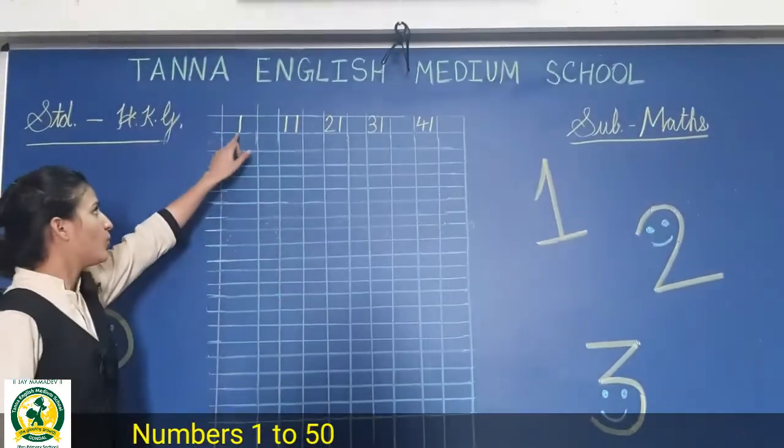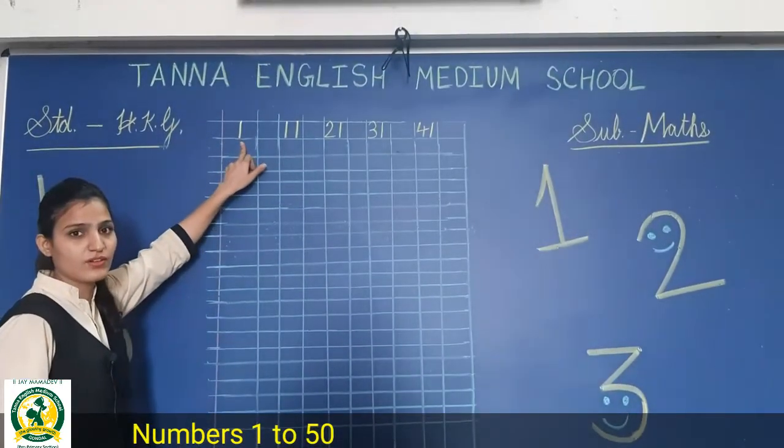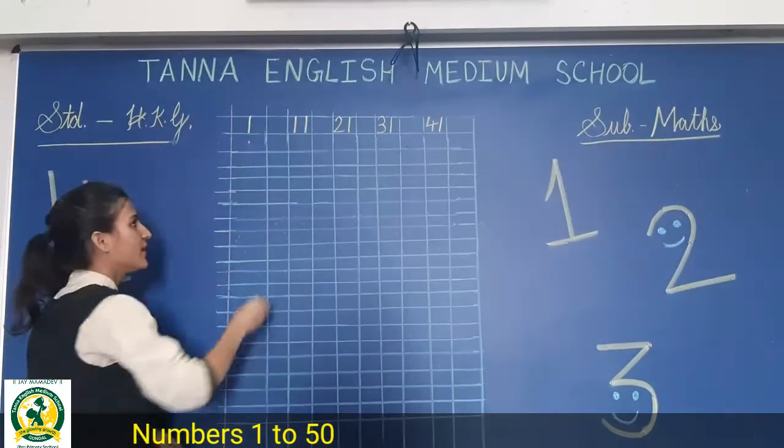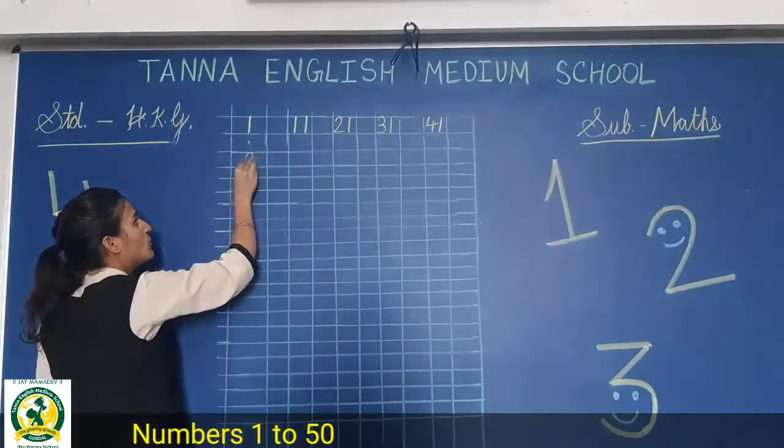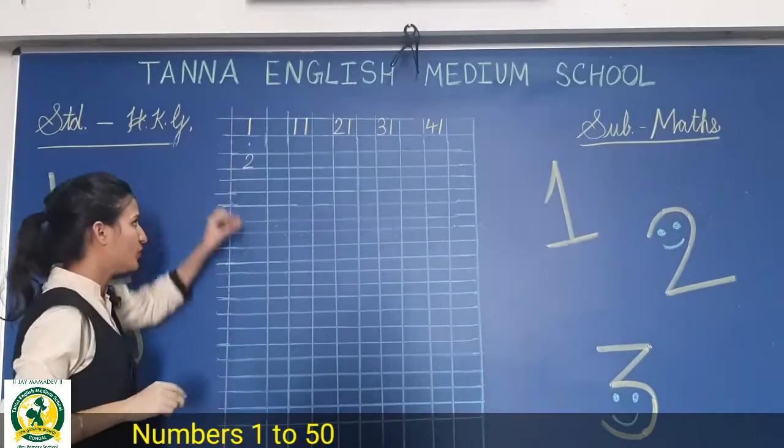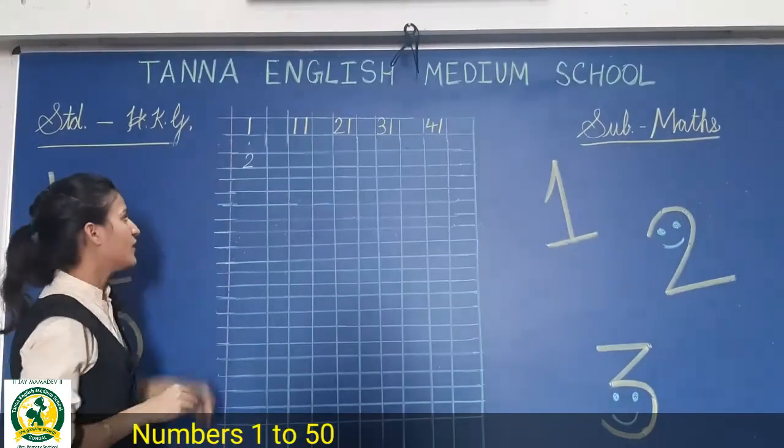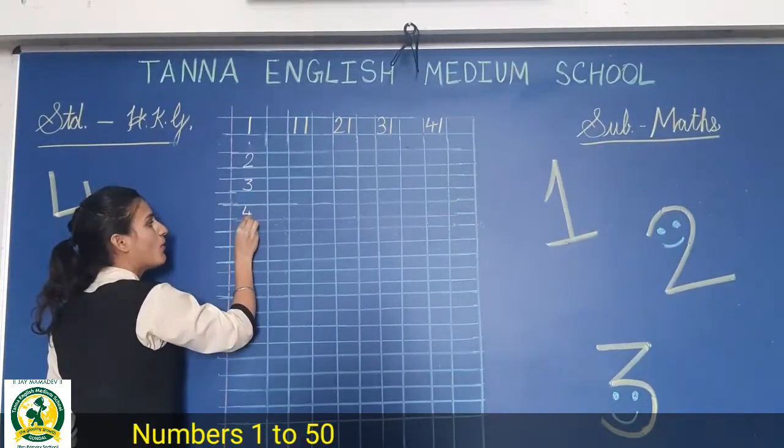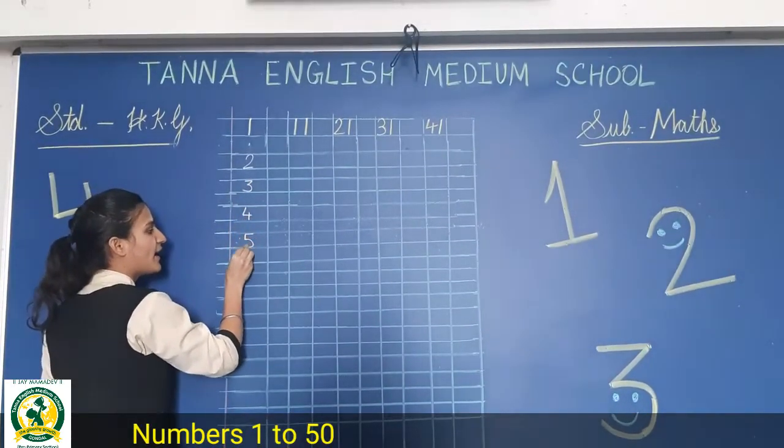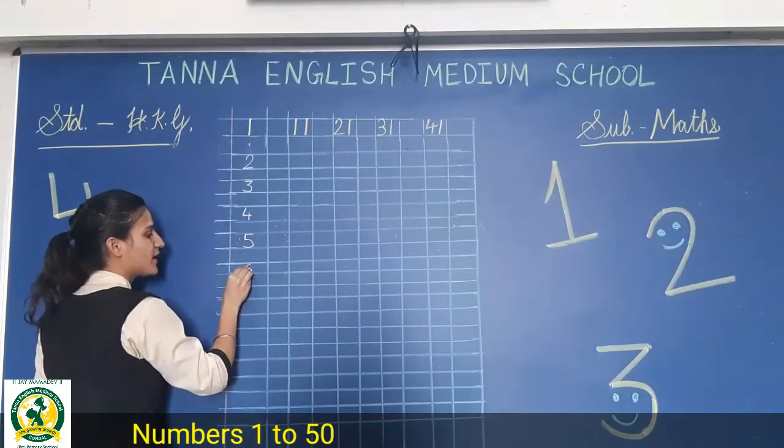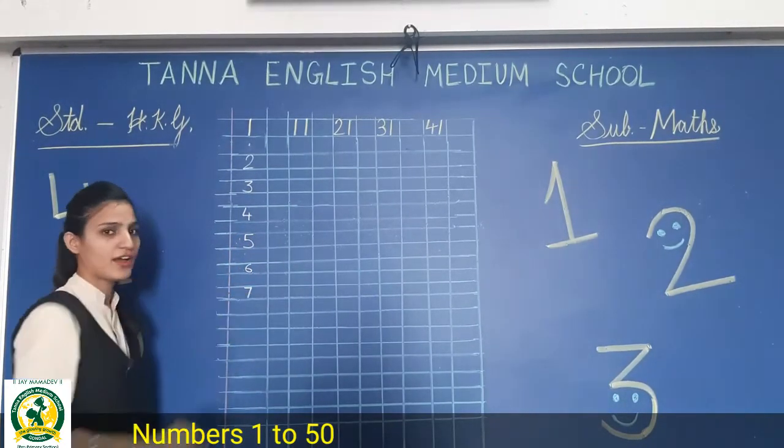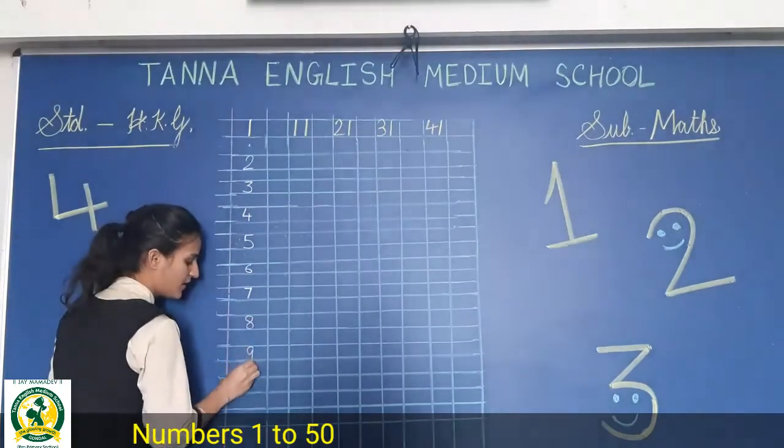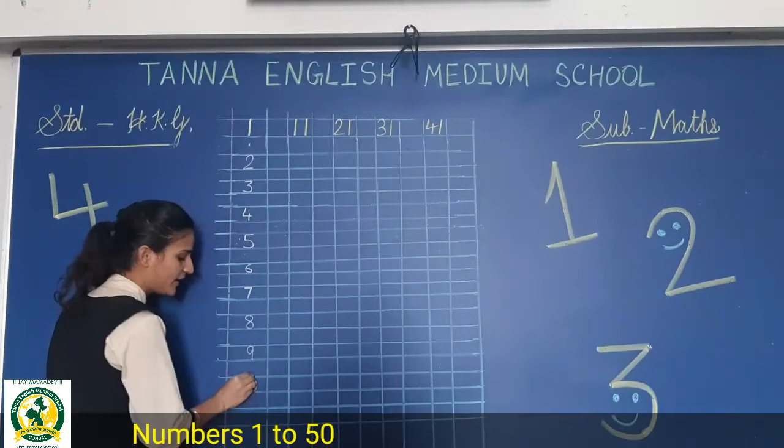See, 1 is written here, already in your book. So after 1, leave 1 box, then write number 2. Okay, then after 2, 3, 4, 5, 6, 7, 8, 9, 10.